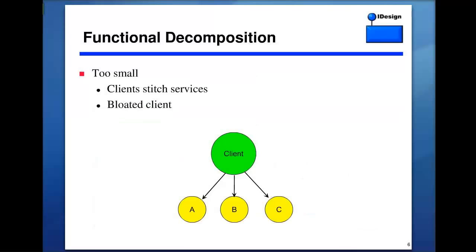When services get too small, it's up to the client to stitch them together — and it's more than just polluting the client with a bit of business logic. It typically leads to a bloated client, just like that god object. You tend to keep objects as dumb as possible and the client as smart as possible, because any change to the services would affect all of them, making the client very complex and polluted.